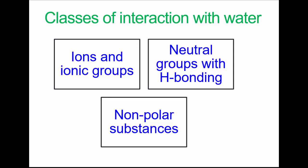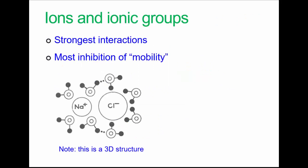Okay, the main classes of interaction. We'll look at them each fairly briefly. Ions and ionic groups—as you might expect, ions having full charges form the strongest interactions.